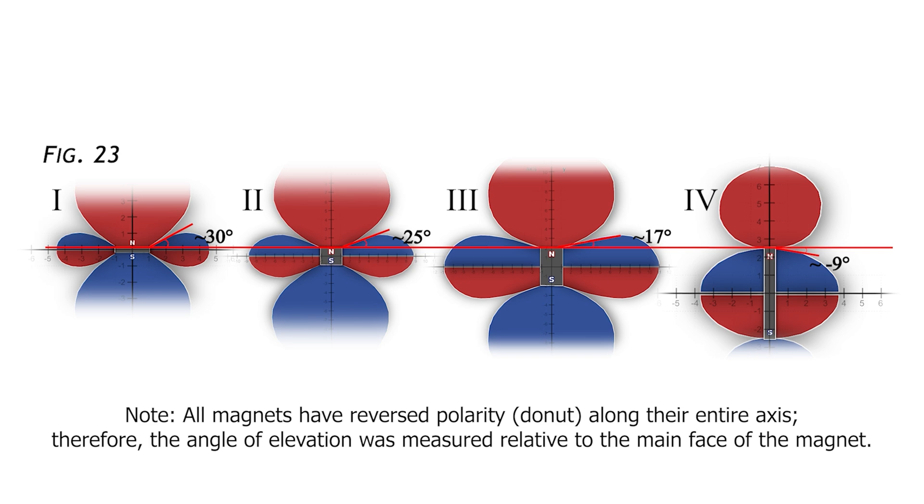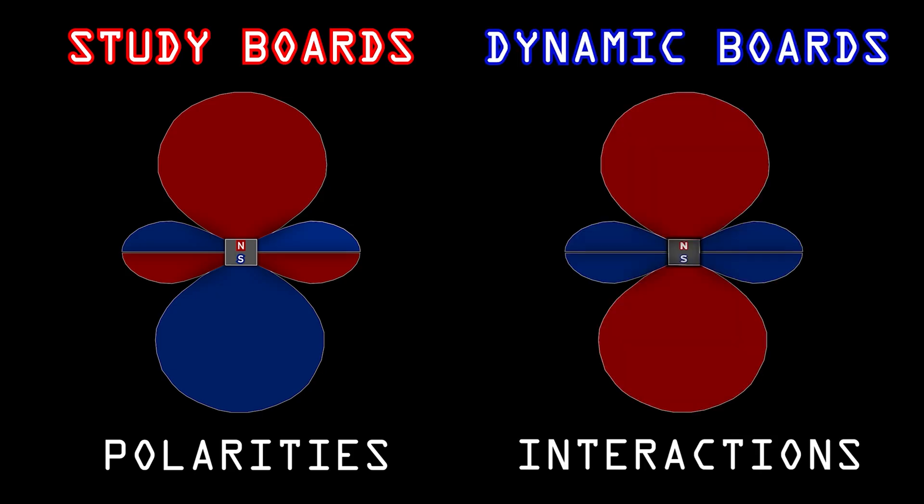So to wrap this part up, the study boards are specifically suited for the study of polarities, and not of interactions. And this is where the dynamic boards come into play. But first, you need a premise, because these boards are way more important.